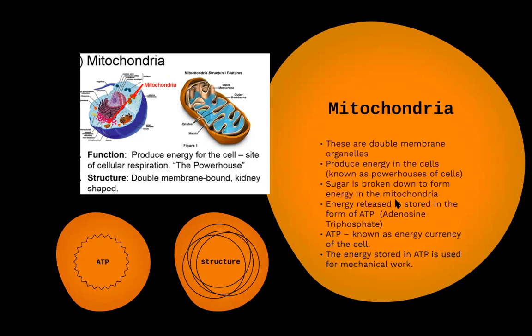The energy released by the breakdown of sugar is stored in the form of ATP — adenosine triphosphate. You can consider ATP as batteries or cells — it is the energy currency of the cell. Like when you use a toy, you use AAA batteries that have energy stored in them. The second type is a rechargeable battery: you charge it using an electric charger, and once charged it provides power.